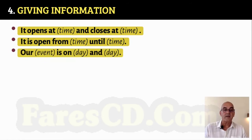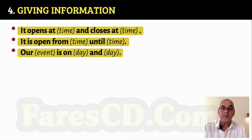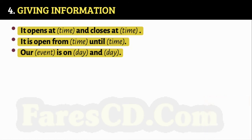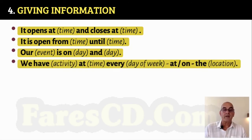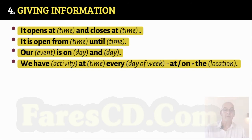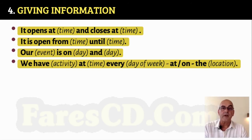Our event is on [day] and [day]. For example: Our staff meeting is on Monday and Thursday. We have [activity] at [time] every [day of week] at or on the [location]. For example: We have yoga at 7am every day on the beach.